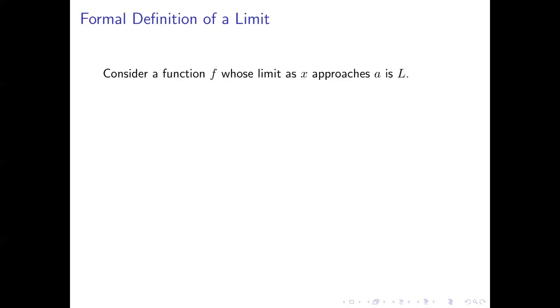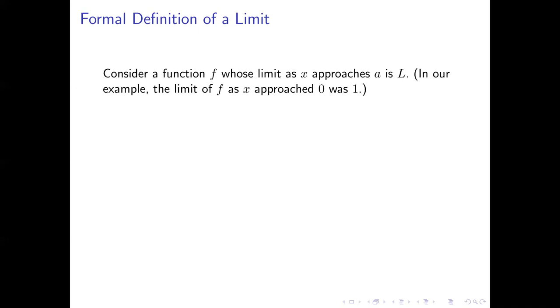So far, we've been relying on a kind of intuitive, informal understanding of a limit, but we can give a formal definition. So let's say we've got a function, and its limit as x approaches a is a number we'll call L for limit. Just to put this in terms of our earlier example, we looked at the limit of f as x approached 0 and saw that it was 1. So here, a is playing the role of 0 and L is playing the role of 1.